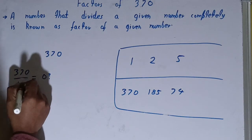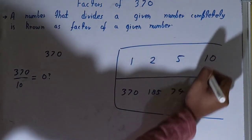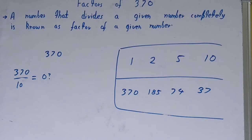Let's check with 10. With 10, it is possible because the last digit is 0. So yes, 10 is a factor. And 10 into what times? 10 into 37 times. So 37 will also be the factor.